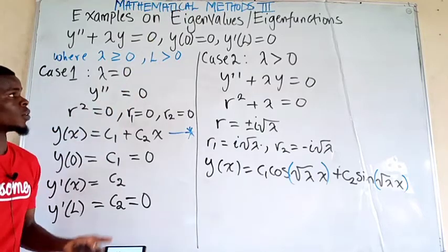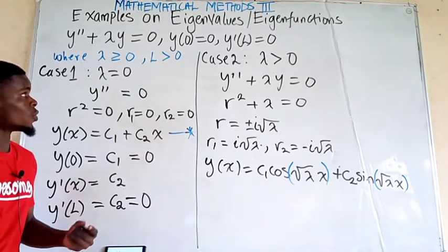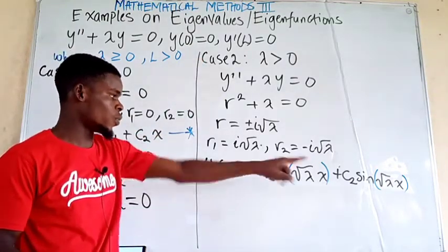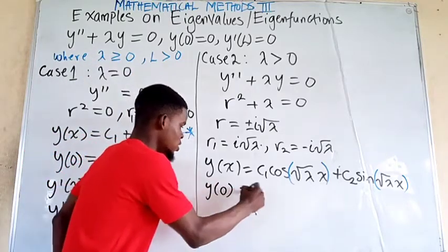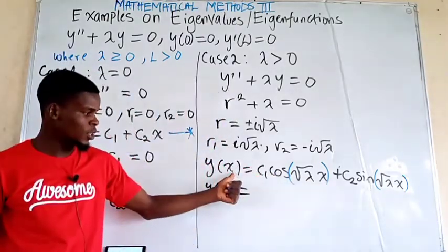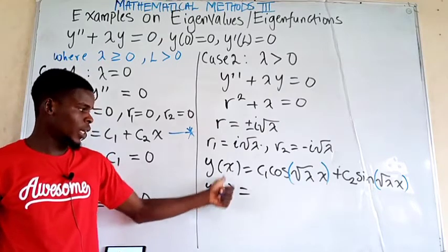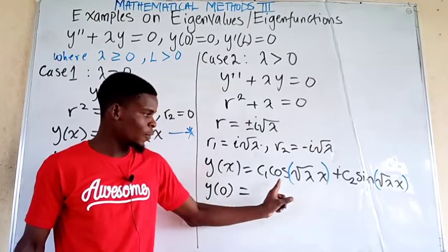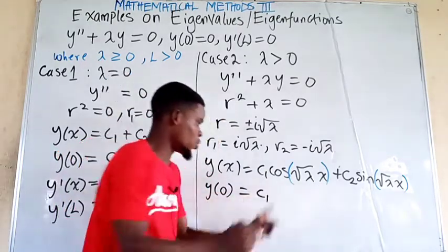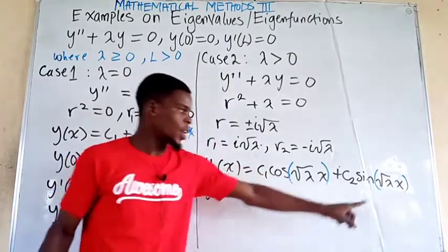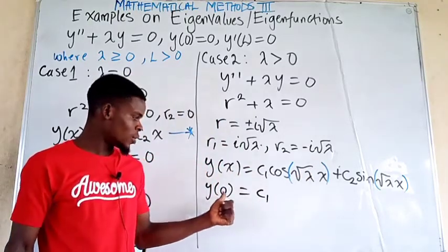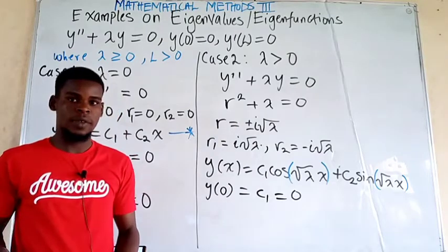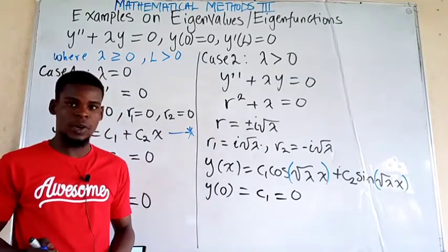Using the boundary conditions: for y evaluated at 0 equals 0, we substitute x equals 0 into the right-hand side. Cosine of 0 equals 1, giving c1 times 1, and sine of 0 equals 0. So y at 0 equals c1, and since this equals 0 from the boundary condition, c1 equals 0.